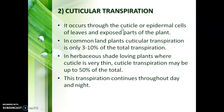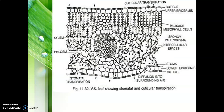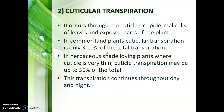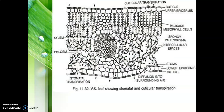Next is cuticular transpiration. This type of transpiration occurs through the cuticles. In many plants, the cuticle is very thin, so transpiration is more. But in some plants like xerophytes where water is very low, the cuticle is very thick to reduce transpiration. Cuticular transpiration contributes 3 to 10 percent of total transpiration. It continues day and night and never stops because it has no closing and opening mechanism like stomata.